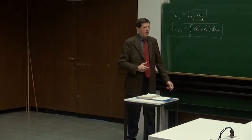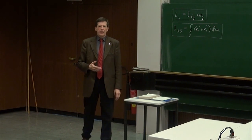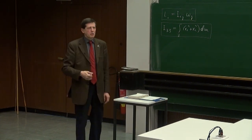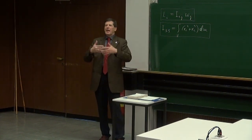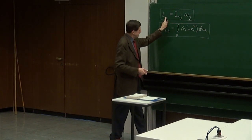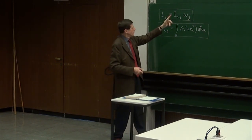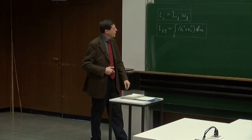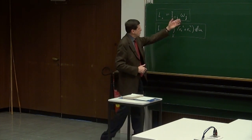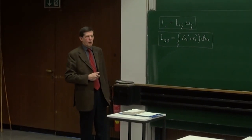Das heißt, wenn man diese Gleichung anschaut, so harmlos sie hier erscheint, dann entsteht daraus eine größere Anzahl von Beziehungen, wenn man das in die Langschrift umschreibt. L1, i ist 1, ist I₁₁ Omega₁ plus I₁₂ Omega₂ plus I₁₃ Omega₃ – also Summe über j, j von 1 bis 3. Aber das sparen wir uns hinzuschreiben. Bei derartigen Ausdrücken kommt es, wenn ein Index zweimal vorkommt, konventionsmäßig immer als Summe vor, und man erspart sich das Aufschreiben der Summe.